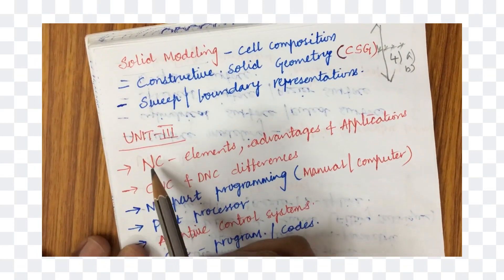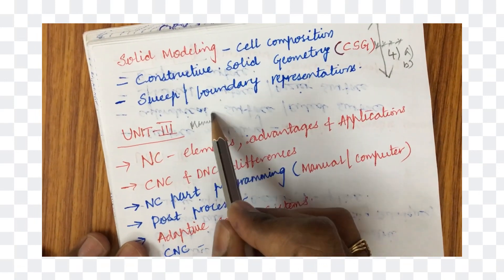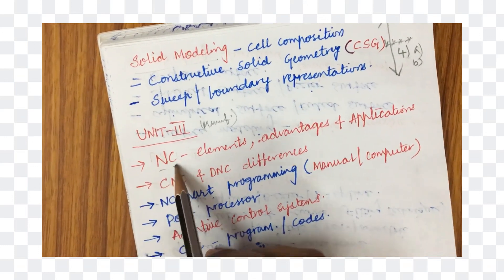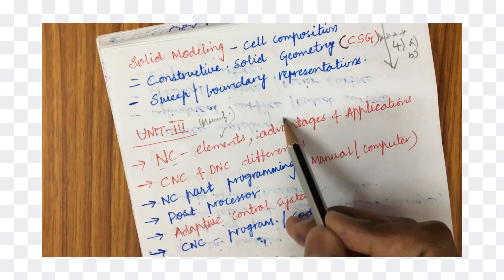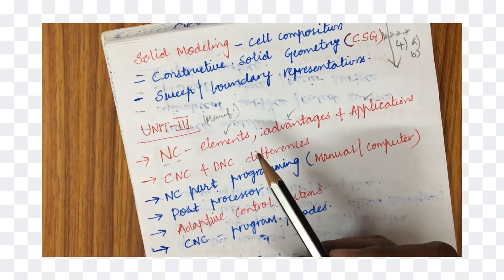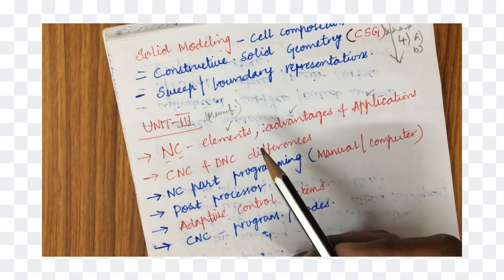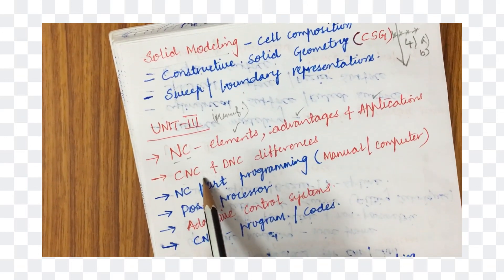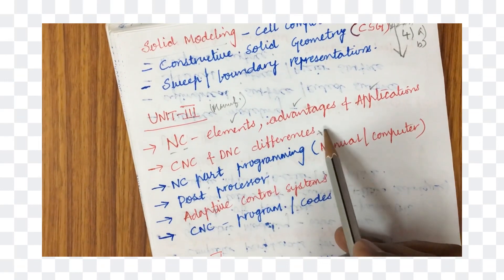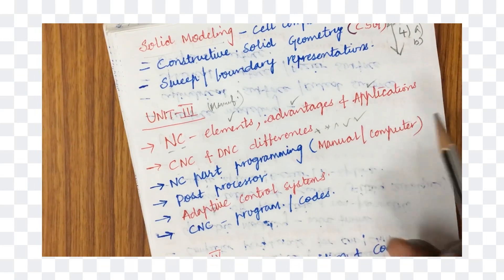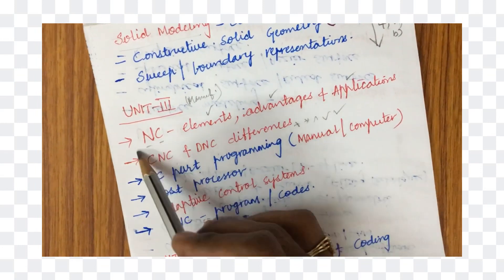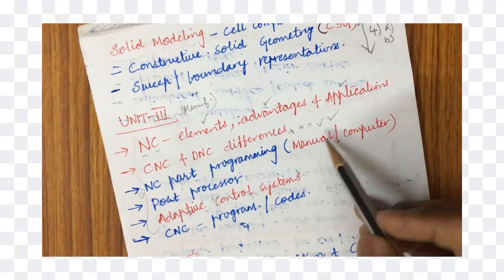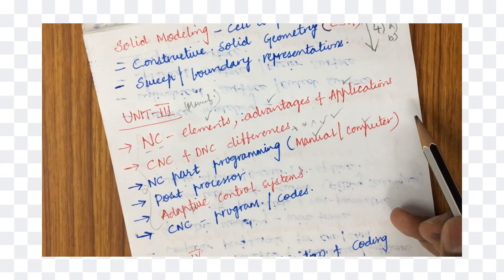Unit 3 is very interesting — from here we talk about the manufacturing part. NC, numerical control, its elements, advantages, and applications are important. Make sure to draw each drawing in pencil and focus on writing in terms of points instead of paragraphs. CNC, computer numerical control, as well as direct numerical control and their differences is a very important repeated question. This unit also covers manual as well as computer-assisted part programming.